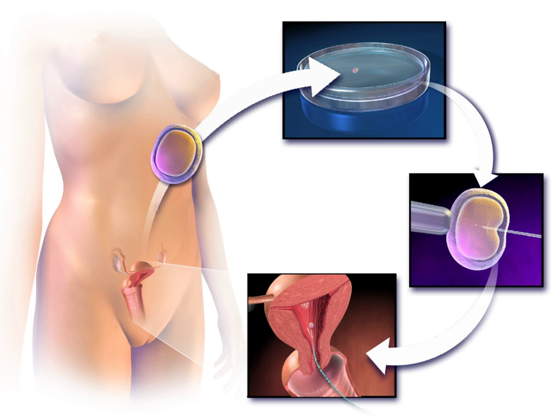A preimplantation genetic diagnosis (PGD) procedure may be conducted on embryos prior to implantation as a form of embryo profiling, and sometimes even of oocytes prior to fertilization. PGD is considered in a similar fashion to prenatal diagnosis. When used to screen for a specific genetic disease, its main advantage is that it avoids selective pregnancy termination, as the method makes it highly likely that the baby will be free of the disease under consideration. PGD is an adjunct to ART procedures and requires in vitro fertilization to obtain oocytes or embryos for evaluation.